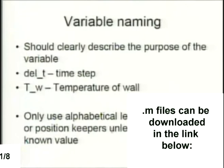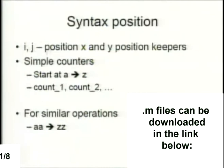Variable naming is important in your scripts. It should clearly describe the purpose of the variable — I like to use delta_t when talking about the time step, and temperature_wall when talking about temperature of the wall. Only use single alphabetical letters for counters or generic variables. I and j are usually used as x and y position keepers. For counters, I usually start at a and go to z, or type out count_one, count_two. For similar operations, I like to use the same letter with multiple versions to keep track of direction.